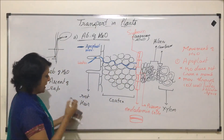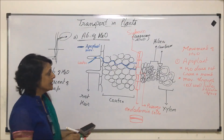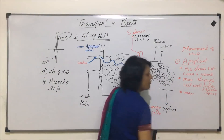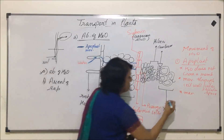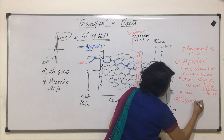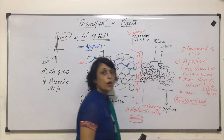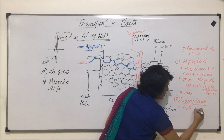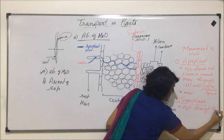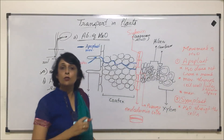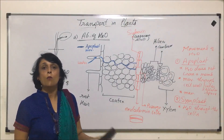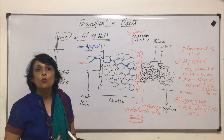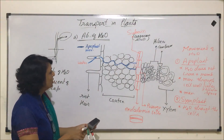This is apoplast movement — the blue line we have represented here. In this case, water has gone either through the cell wall or through intercellular spaces and ultimately it comes to endodermis. Now let us talk about the other movement, that is symplast. In symplast, water gets into the cell — it moves through the cells, becomes a part of cytoplasm or cell sap, and then moves from one cell to another through plasmodesmata.